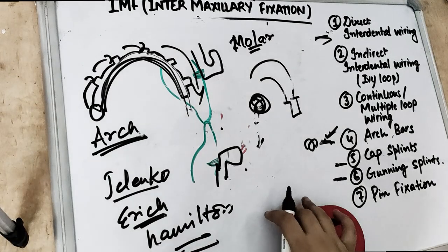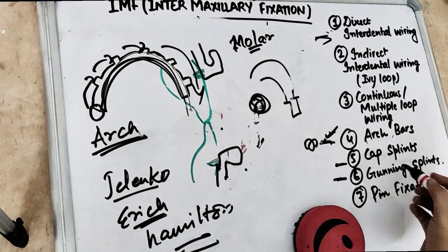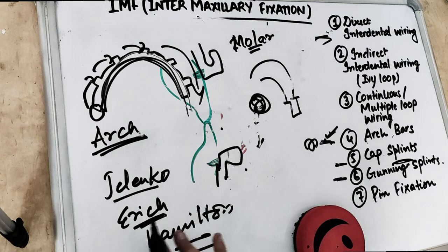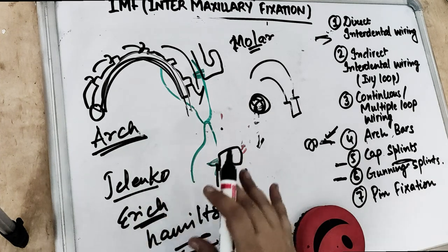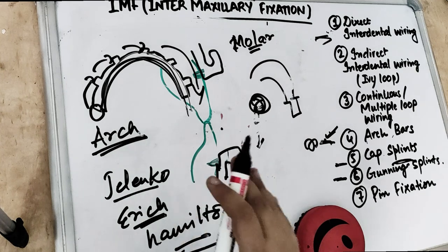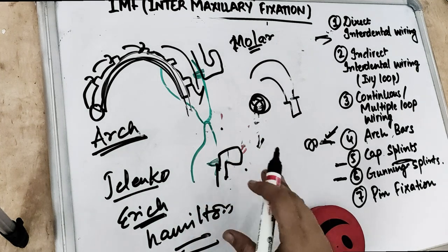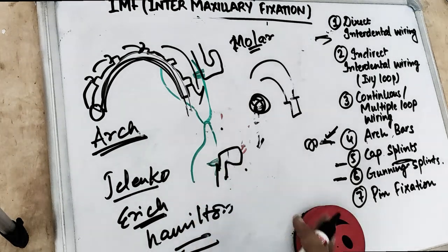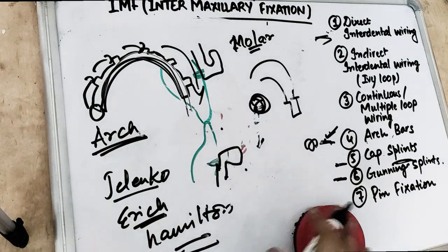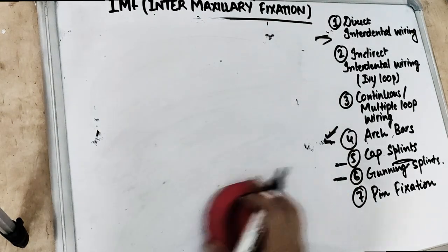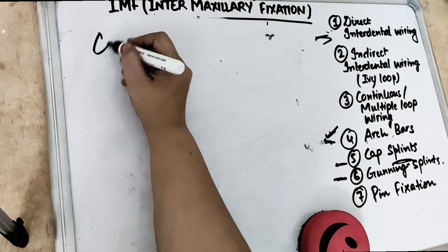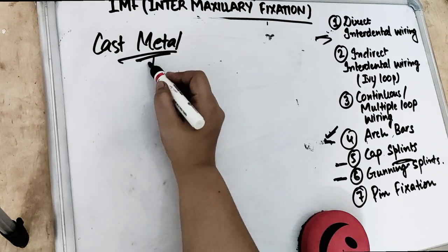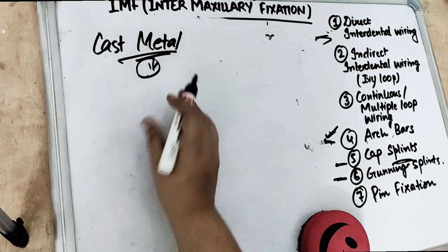When wiring of the teeth will not provide adequate fixation, we go for splints. Splints are used for horizontal splinting when the fracture zone is required without closing the patient's mouth, when both jaws are edentulous, or in growing children with mixed dentition where we don't want to damage any tooth germ. We have cast metal splints which are custom-made for individual patients.